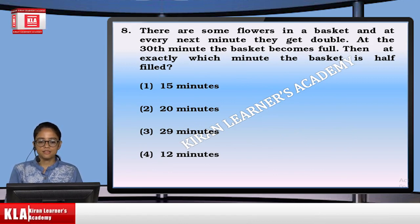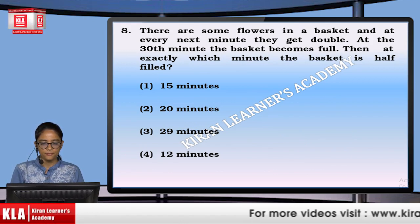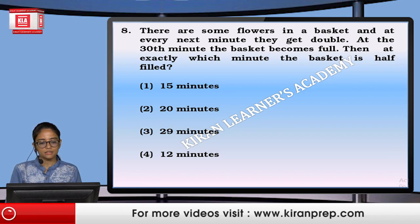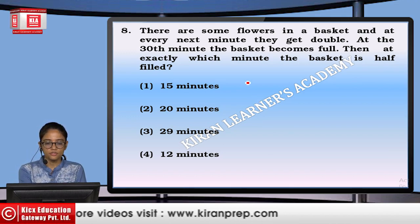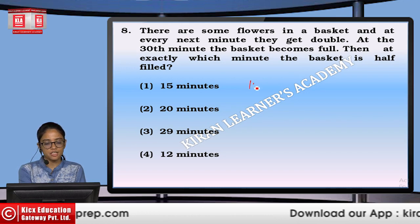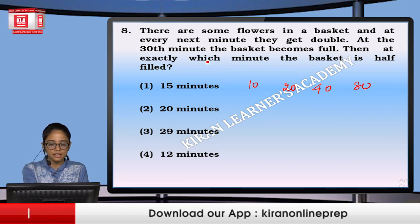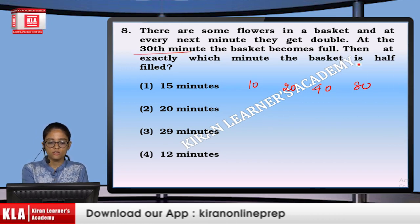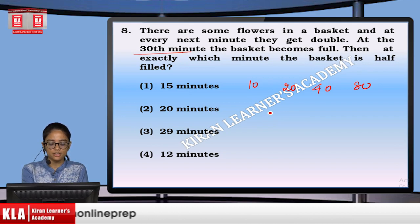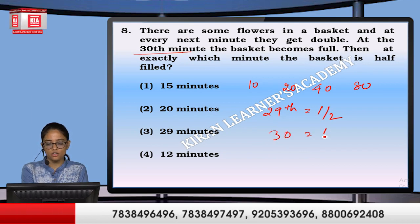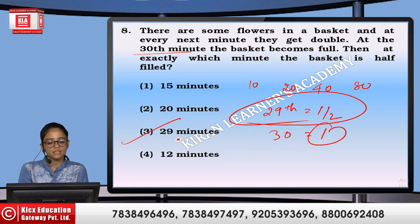There are some flowers in a basket and every next minute the number doubles. At the 30th minute the basket becomes full. At which minute was the basket half full? Since the flowers double every minute — 10, 20, 40, 80 — the basket must have been half full just before the 30th minute. So at the 29th minute it was half full.